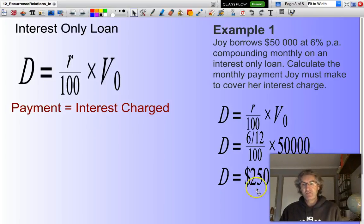Effectively, Joy needs to pay $250 in interest, and she just needs to keep paying that month after month, year after year. At the end of her loan, her last repayment will be the $250 interest plus the $50,000 which she originally borrowed. A very useful taxation strategy when you wish to minimize your tax.